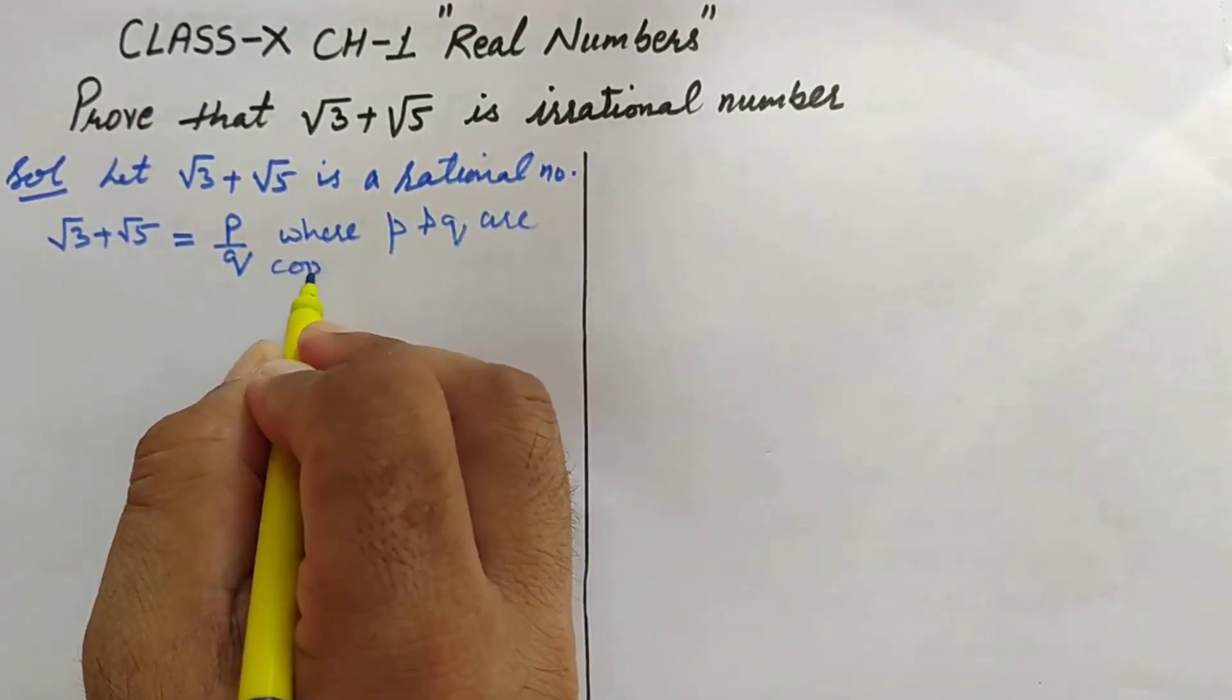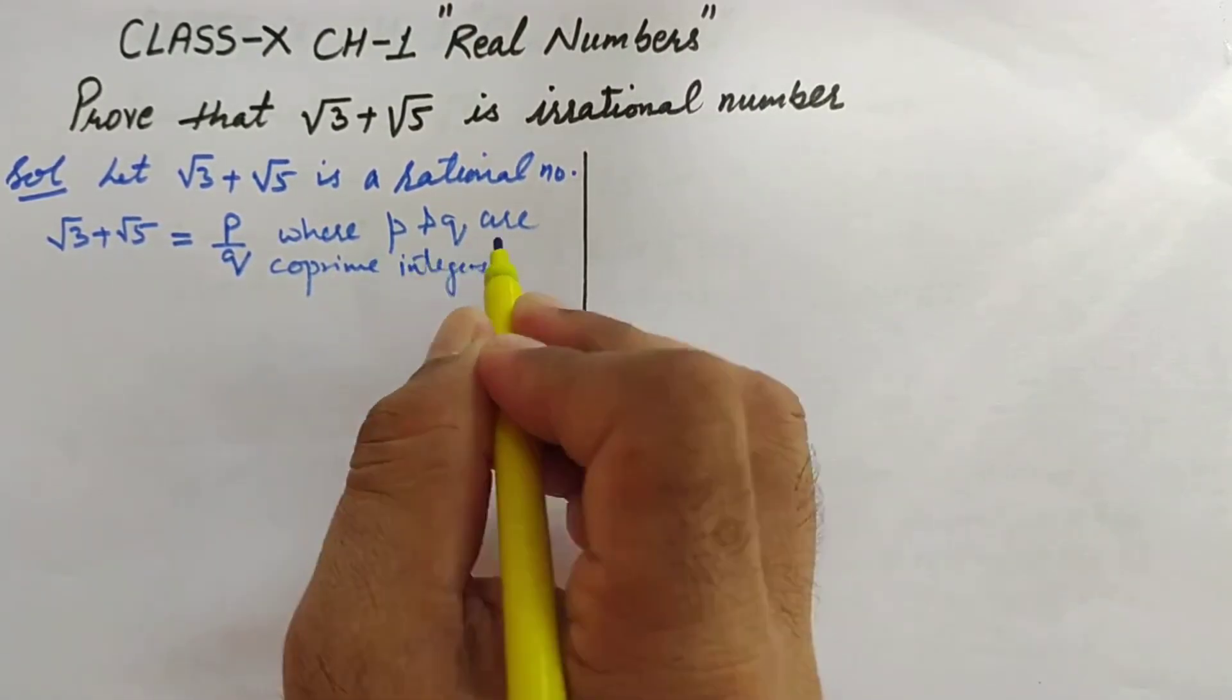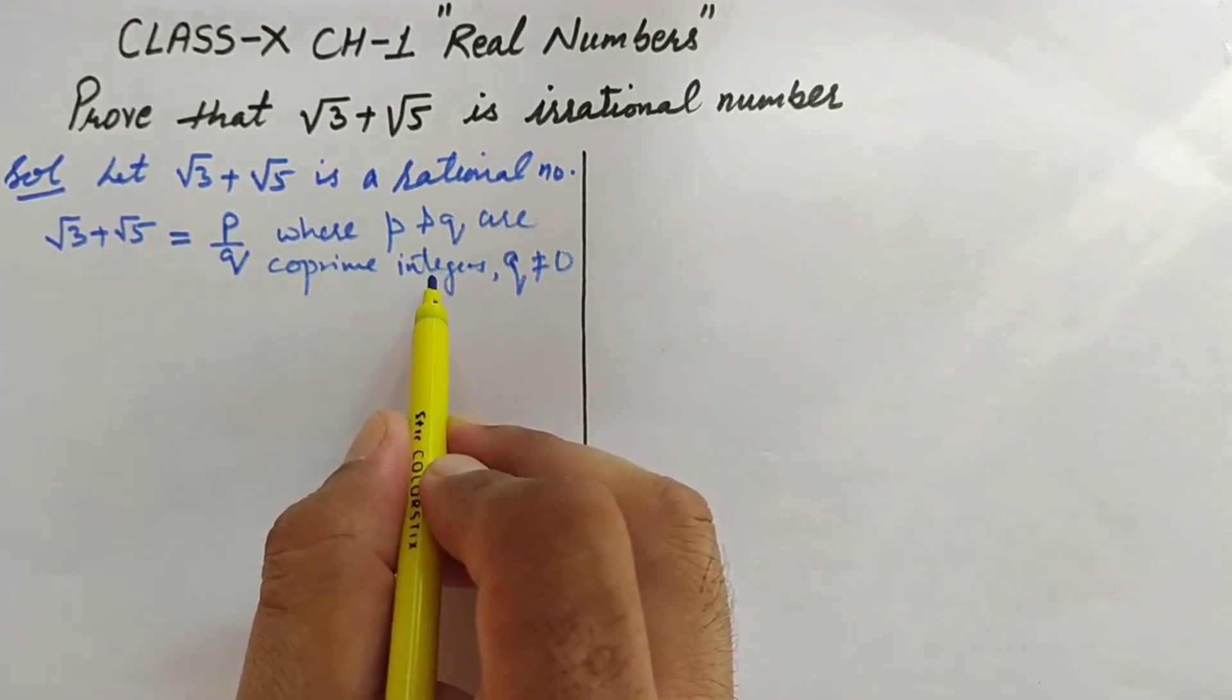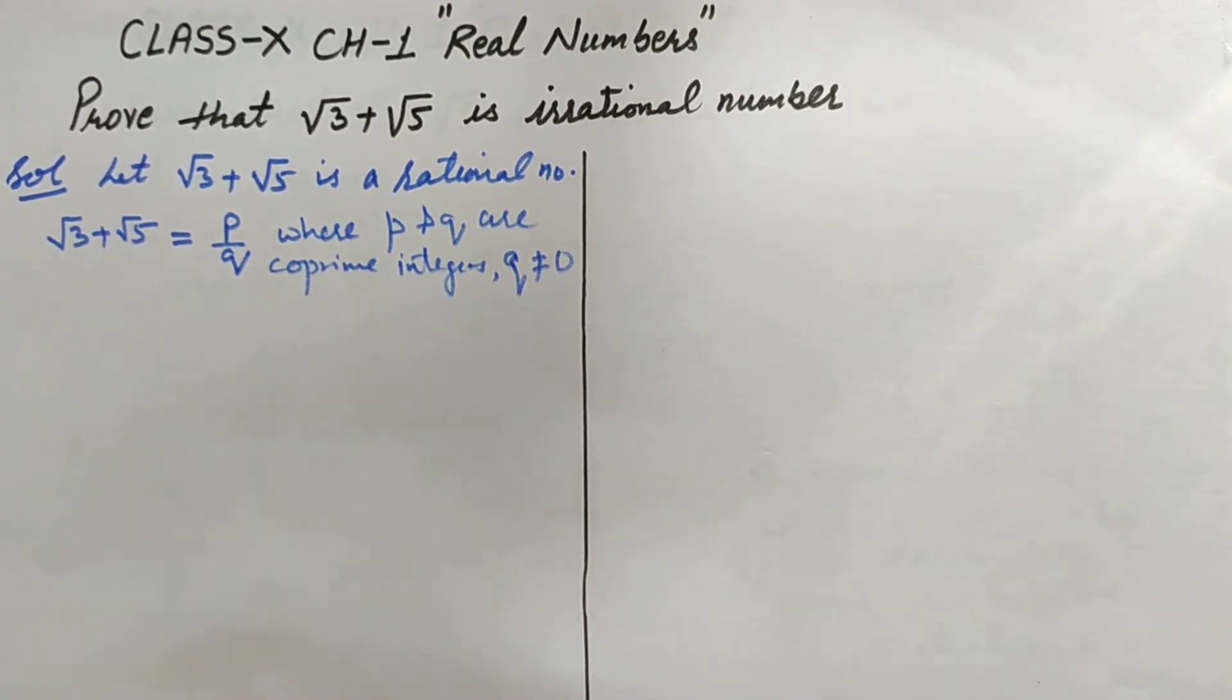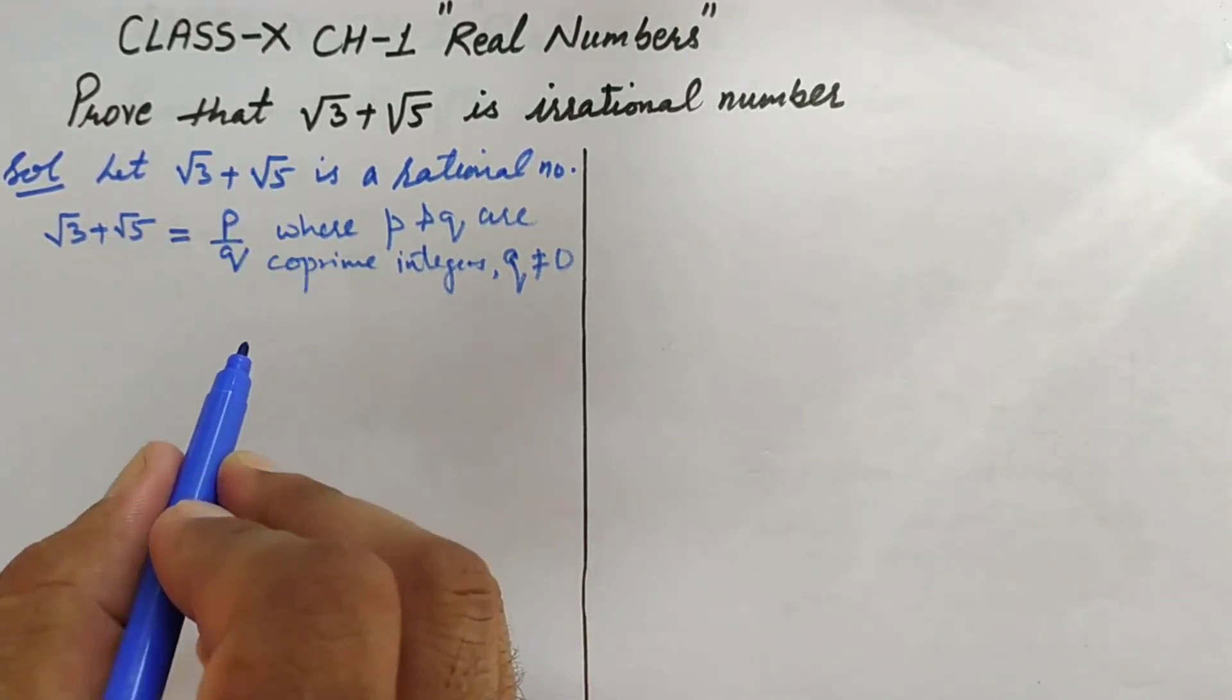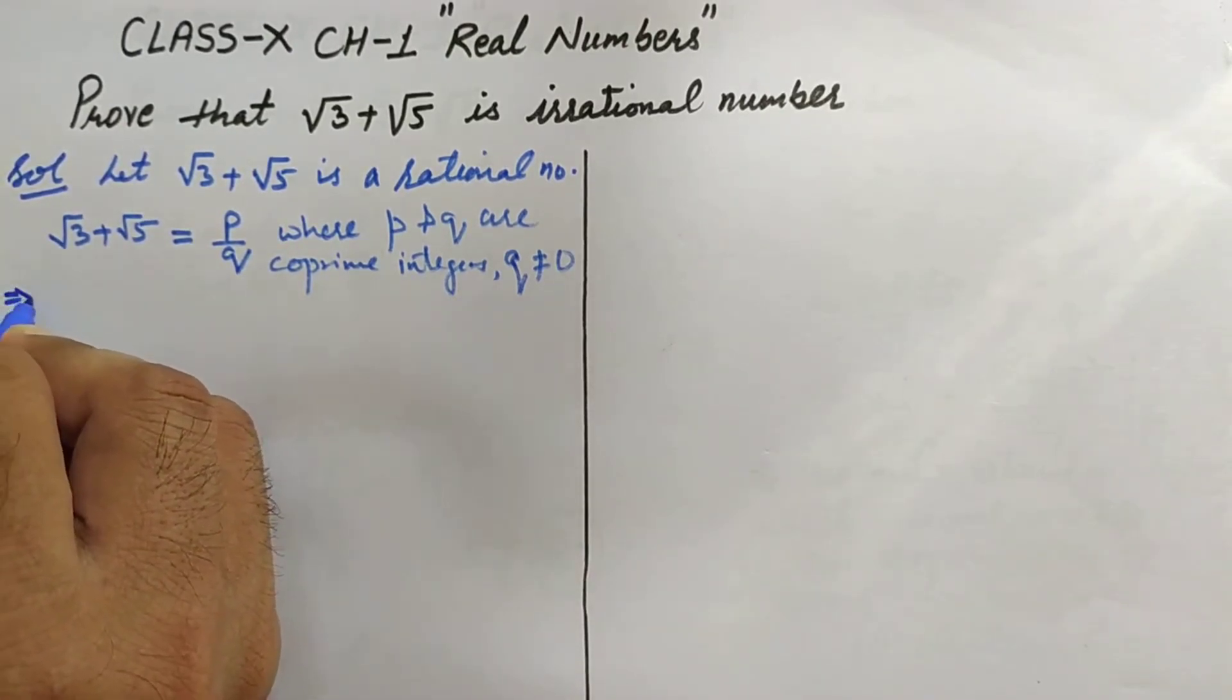And q does not equal zero. Co-prime integers are integers which do not have any common factor other than one. Now what we do is we will take either √3 or √5 to the right-hand side. I am taking √5 to the left-hand side, so it becomes √3 = p/q - √5.